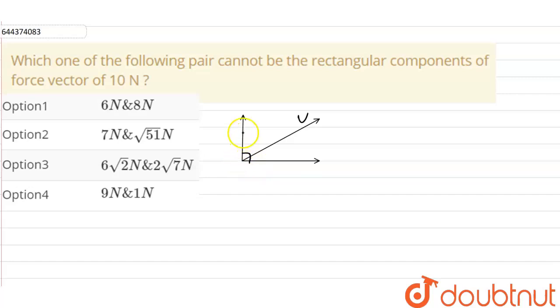Now we have to find that the rectangular component of the force vector 10 newton. So what we can say from here, let us say this is vy and this is vx as the component of the v vector.